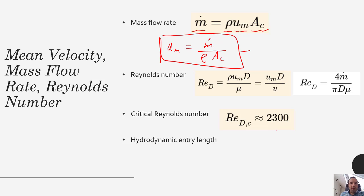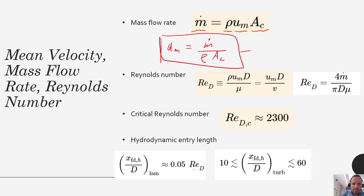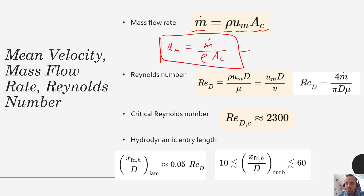Of interest is the hydrodynamic entry length — how far into the pipe you must go before the flow becomes fully developed. This depends on whether the flow is laminar or turbulent. For laminar flow: x_fd,h / D ≈ 0.05 · Re. So you calculate Re based on pipe diameter, multiply by 0.05, then multiply by D to get the entry length. For turbulent flow, the entry length is typically independent of Reynolds number and falls between 10 and 60 pipe diameters.